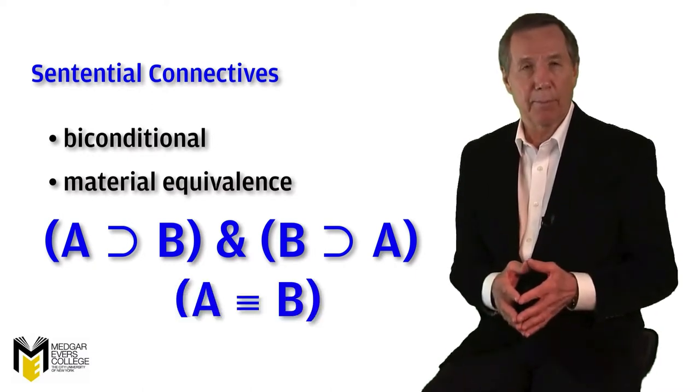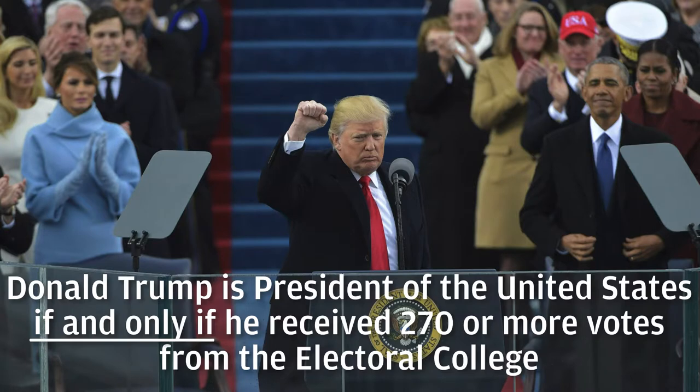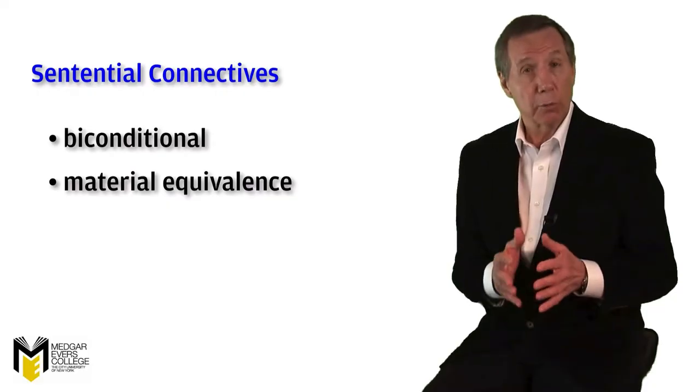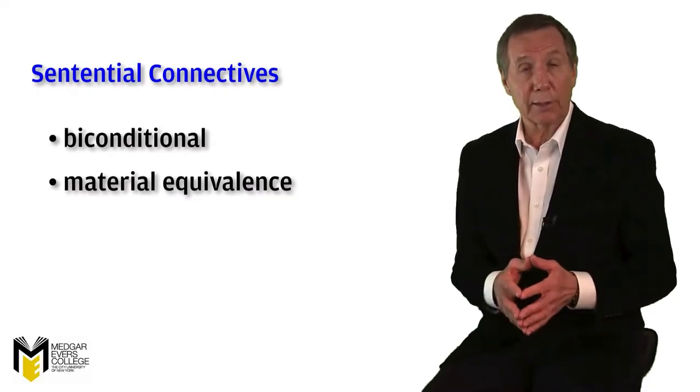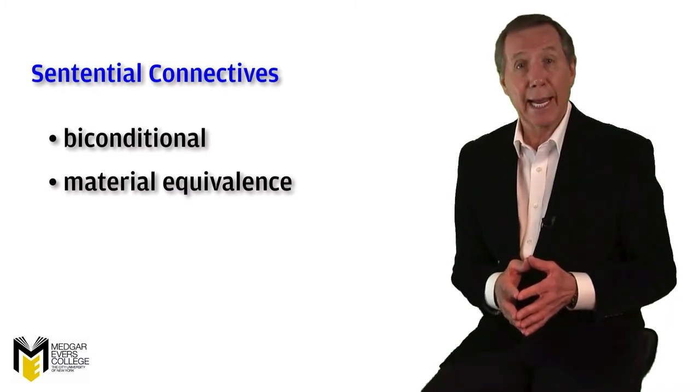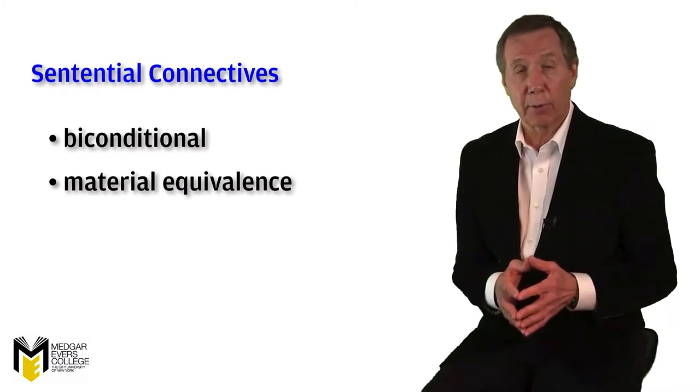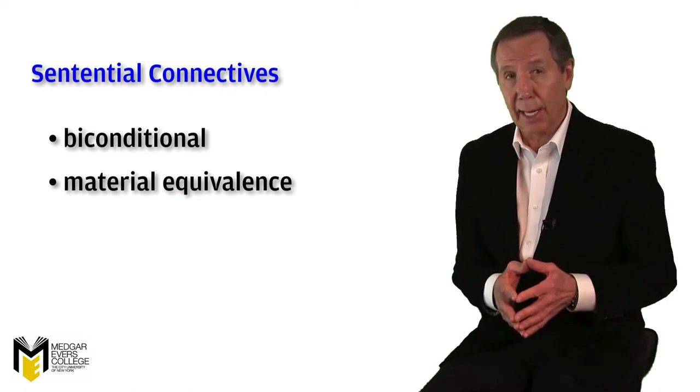Here's an example. Donald Trump is president of the United States if and only if he received 270 or more votes from the electoral college. That is, receiving 270 or more electoral votes is both necessary and sufficient to win the presidency. And Trump did just that.